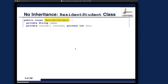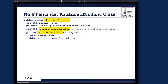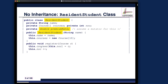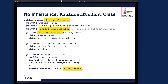Let's look at the ResidentStudents class first. We have a name, an array of courses, and the number of courses — same as the first design — and also premium rates, which are only applicable to this class, achieving cohesion. We have a constructor initializing the name and number of courses to 10. We have a register method storing course objects at the relevant index, and a getTuition method that sums up all course fees to get the base amount, then applies the premium rates for resident students.